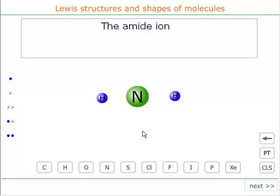The question is, what is the shape of the amide ion using the Lewis structure? Well, each hydrogen must be bonded by a shared pair of electrons, in which one of the electrons is provided by the nitrogen, and one is provided by the hydrogen.